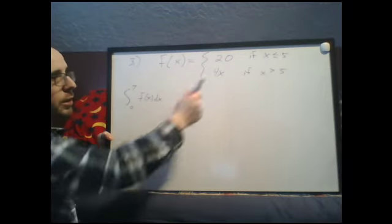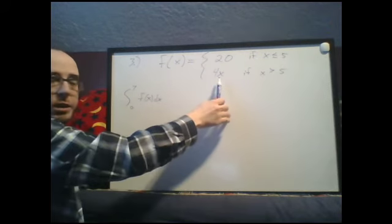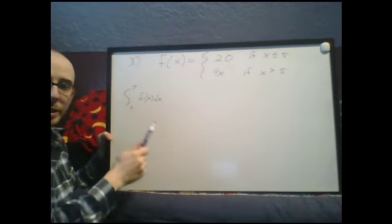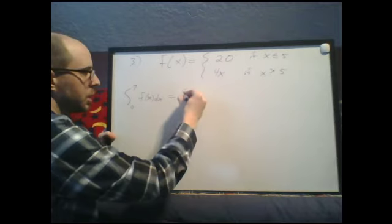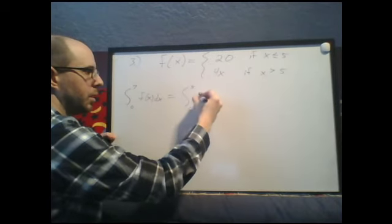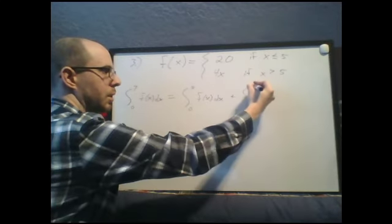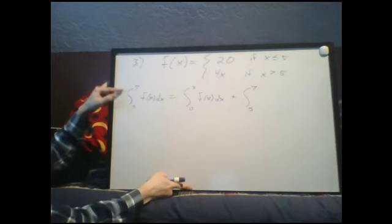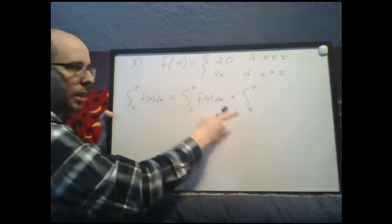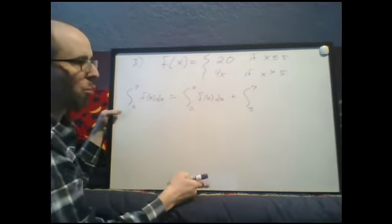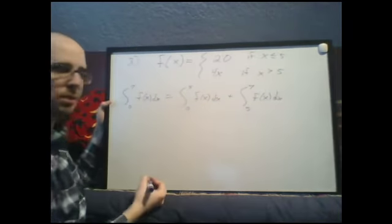But between 0 and 5, this is my function, 20. When x is bigger than 5, my function is 4x. So since I'm going from 0 to 7, I use both of these, but I have to split it up. So what I want to do is split this up as 0 to 5, f of x dx, plus the integral from 5 to 7. Once I get to 5, that's where my function changes. So I have to stop there and pick up again starting at 5 and going the rest of the way to 7.